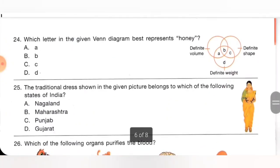Twenty-fourth one: which letter in the given Venn diagram best represents honey? Honey is a liquid form of matter. It has definite volume and definite weight, but honey doesn't have a definite shape. So the letter representing definite volume and definite weight — which is A — applies to honey. Option A is the correct answer.